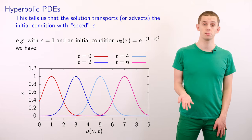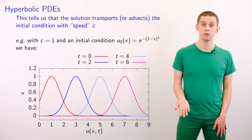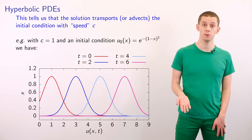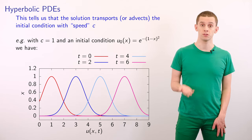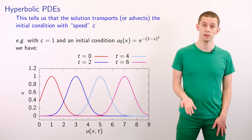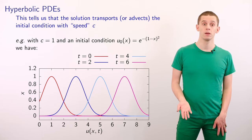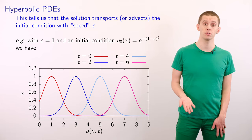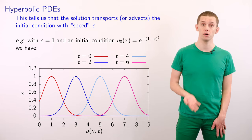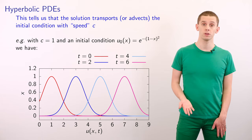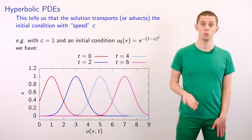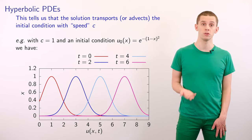This tells us that our solution transports, or advects, our initial condition with speed c. It's worth noting that in this area of the literature, c is often referred to as a speed, even though it's technically a signed quantity and therefore more accurately a velocity. As an example, let's look at the case when c equals 1 and our initial condition is a Gaussian centered on x equal 1. If we look at the plot at our solution at t equal 2, 4, and 6, then we see that the Gaussian progressively moves to the right.